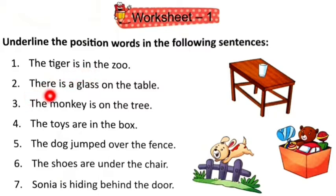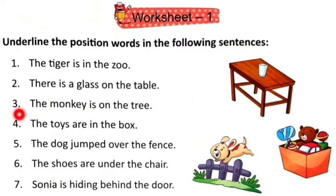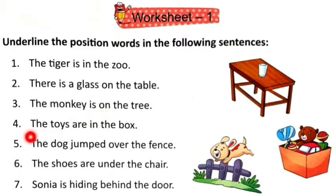Number 2: There is a glass on the table. Yahaan per position word kya hoga? On. Number 3: The monkey is on the tree. So position word ko aapne find out karna hai aur use underline karna hai. Number 4: The toys are in the box.